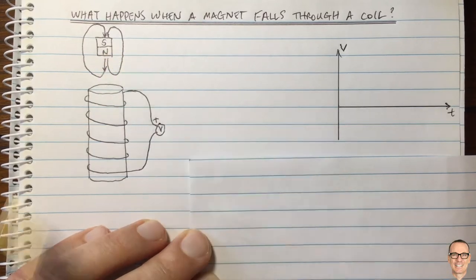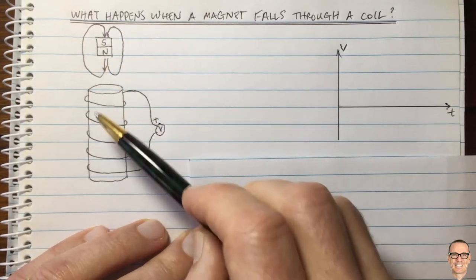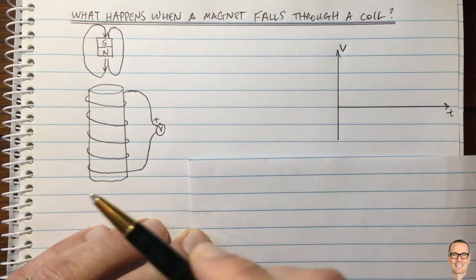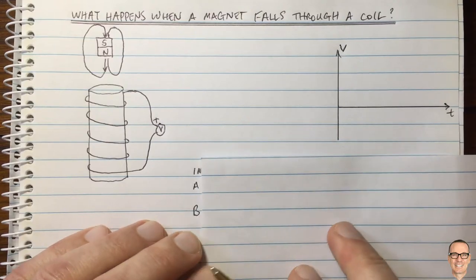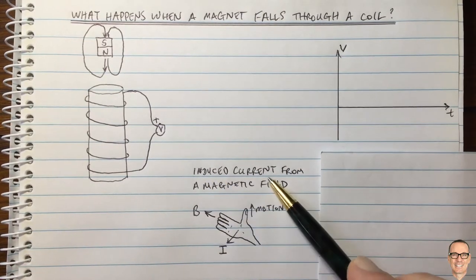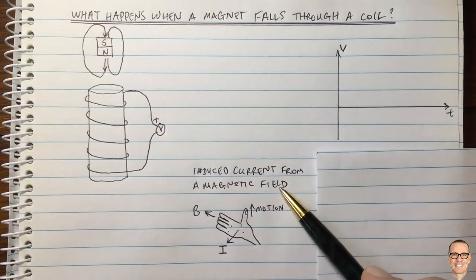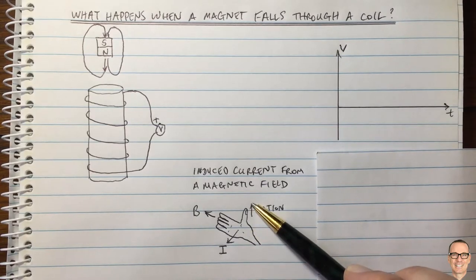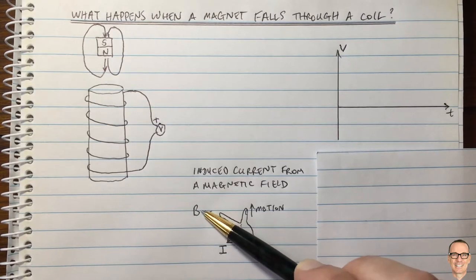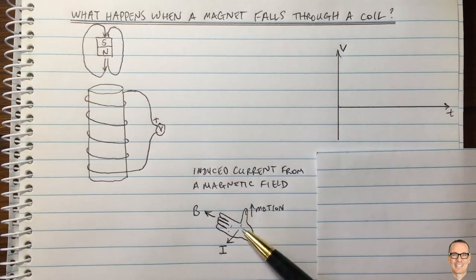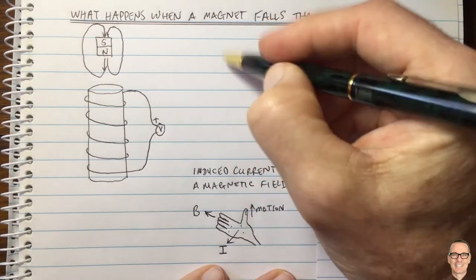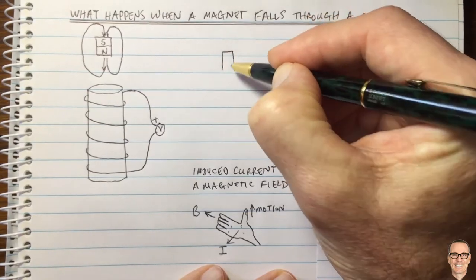Here we have the falling magnet. It's better to think of this in terms of the wire moving up towards the magnet, because we have a right-hand rule for that scenario. Here's the right-hand rule for induced current from a magnetic field in a wire: if the motion of the wire is the thumb and the magnetic field of the fingers is acting on the wire, then the current will be in the direction of the palm.